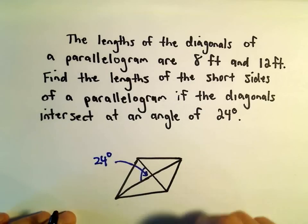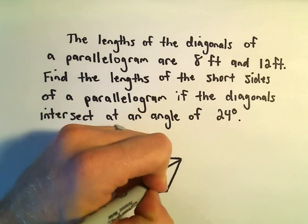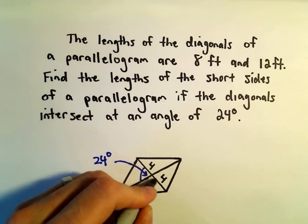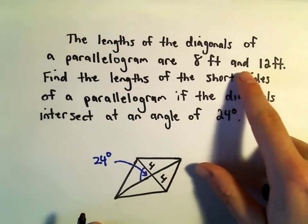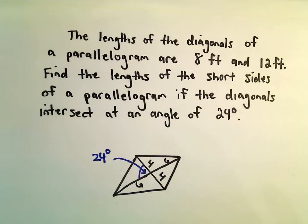One parallelogram had a diagonal of 8 feet, so if that gets cut in half, one side will be length 4, the other will be length 4. Also, one side had 12 feet, so if you cut that in half, it'll be 6 and 6.